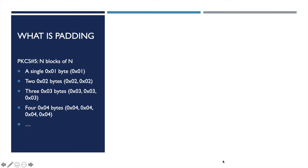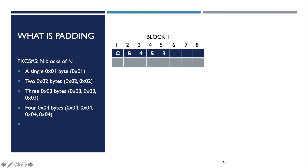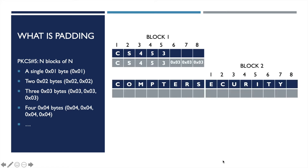For example, if our plain text is CS453 and we want to use blocks of size 8 to store our message. Since there are 5 characters in CS453, there are 3 empty spaces left. Therefore, we pad 3 x03 bytes to fill in the blanks and make the size of our padded message to be a multiple of 8. If our message exceeds the block size, we simply move on to the next block and pad it with the same rule.